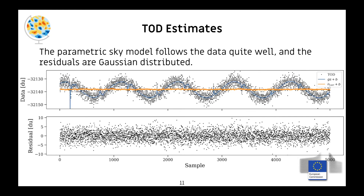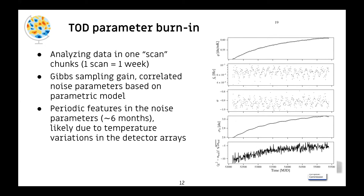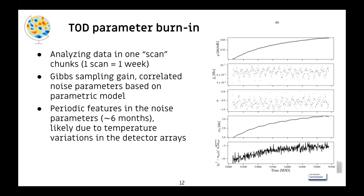We have a sky model for the TOD which generally looks quite good. The orange line is the baseline plus the correlated noise; the blue line is the sky model, and the black dots are the raw data. The residuals are generally well described by a Gaussian distribution. We are still in the burn-in phase for some parameters. For example, plots of gain, knee frequency, noise model slope, standard deviation, and relative chi-squared show a slight drift, though the gain is quite steady. We are able to describe the data very well, but there is a question of whether the noise model is correct — we are using a different noise model from WMAP, which will be the focus of the upcoming paper.